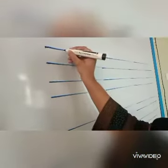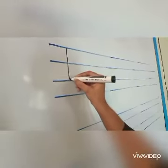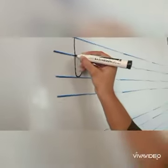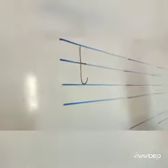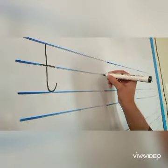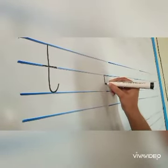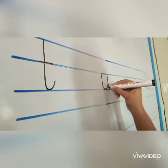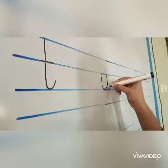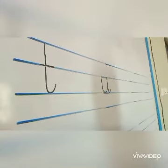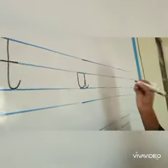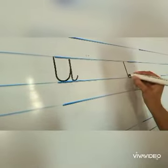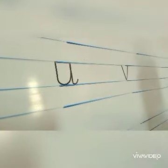Letter T. Letter U — straight line and go up and down and little curve from the bottom. This is V. V is so much easier. Letter V.